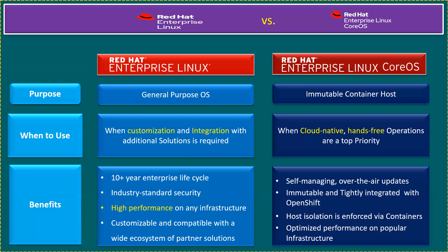Coming to the benefits: Enterprise Linux offers a 10-plus year enterprise lifecycle, industry-standard security, and high performance on any infrastructure — it can run at edge locations, on-premises, private cloud, hybrid cloud, and other cloud environments. It's also customizable and compatible with a wide ecosystem of partner solutions. CoreOS offers self-managing over-the-air updates and is immutable, tightly integrated with OpenShift only, not exposed to other environments. Host isolation is enforced via containers — either Docker or Podman — and it provides optimized performance on popular infrastructure.